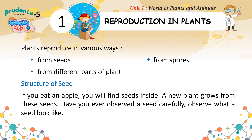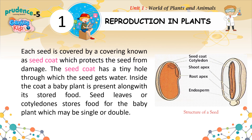Structure of Seed: If you eat an apple, you will find seeds inside. A new plant grows from these seeds. Each seed is covered by a covering known as the seed coat, which protects the seed from damage. The seed coat has a tiny hole through which the seed gets water. Inside the coat, a baby plant is present along with its stored food. Seed leaves, or cotyledons, store food for the baby plant and may be single or double.